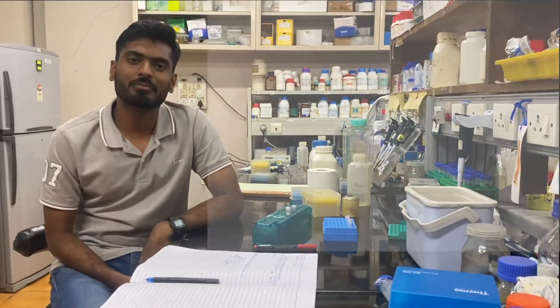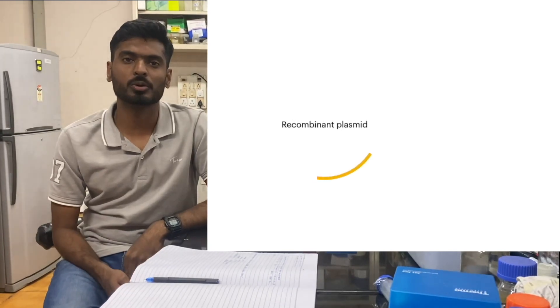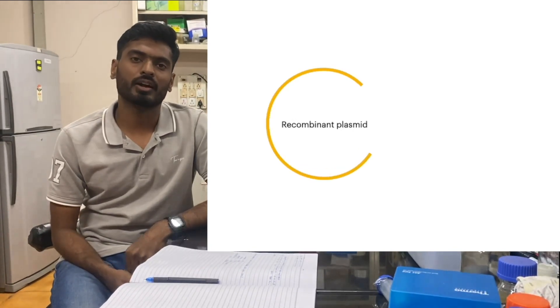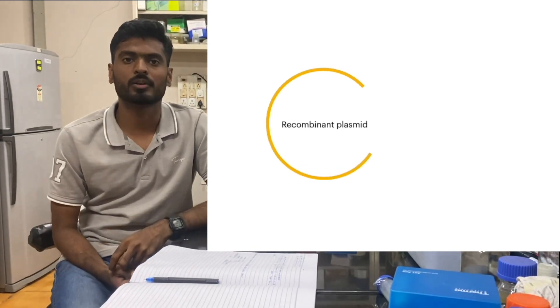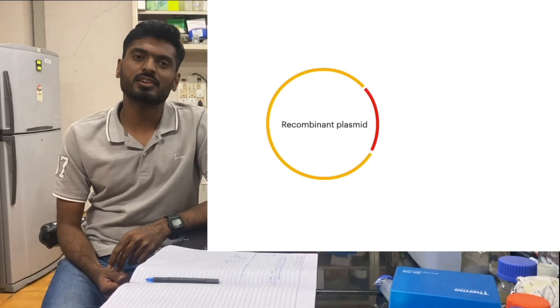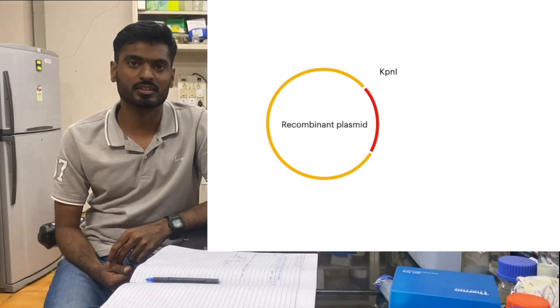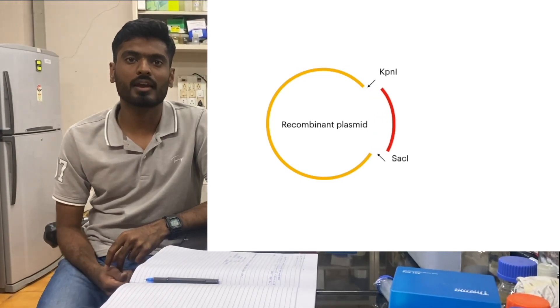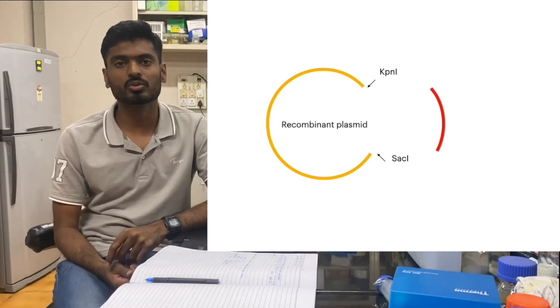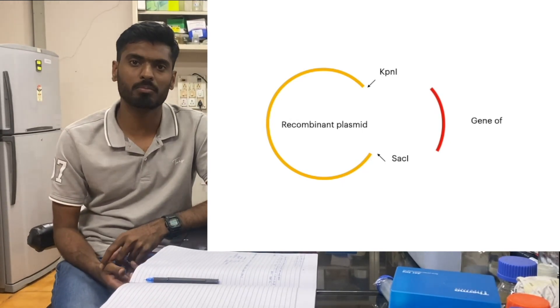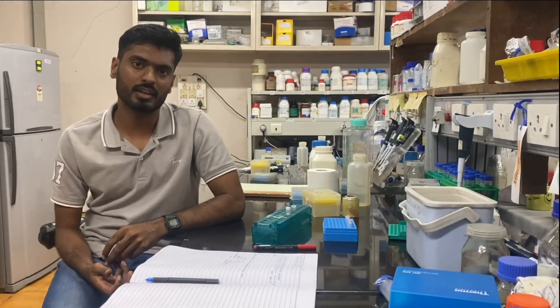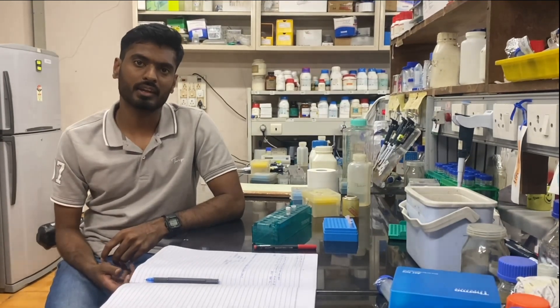Today we will be digesting plasmid DNA in which I have cloned my gene of interest. That's why it has become recombinant DNA. My gene of interest is flanked by the two different restriction endonuclease sites that is KPN1 and Sac1. So today we will be performing the double digestion by using the enzymes Sac1 and KPN1.